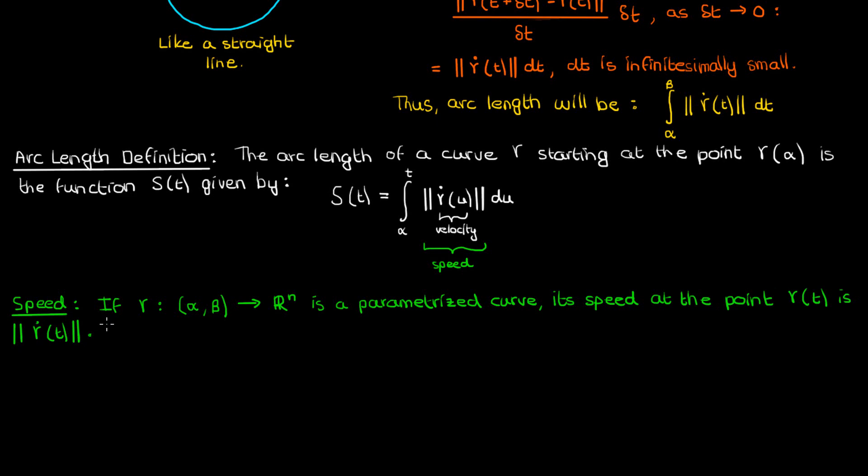Now, along with speed is the idea of a unit speed curve. γ is a unit speed curve if its derivative with respect to time, if the velocity, is a unit vector throughout the curve. In other words, the speed everywhere along γ is equal to 1.